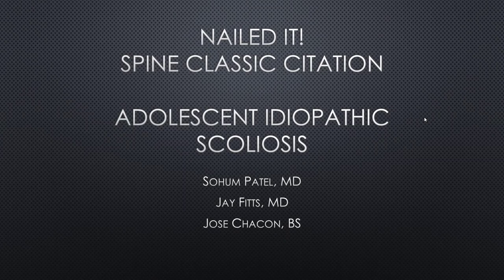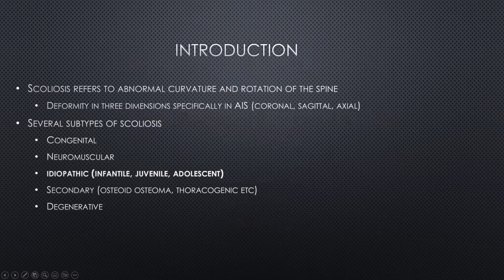Today we're going to be focusing on adolescent idiopathic scoliosis. We'll run through a brief background to kick things off. Scoliosis is a broad term, generally referring to abnormal curvature of the spine. Most people think about coronal plane deformities, but in adolescent idiopathic scoliosis specifically, it's important to consider the rotation as well as sagittal plane deformity. We consider it a three-dimensional deformity.